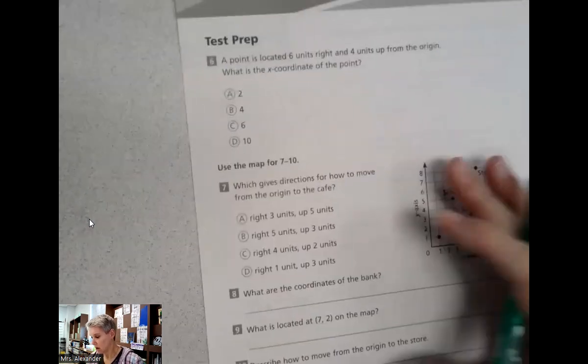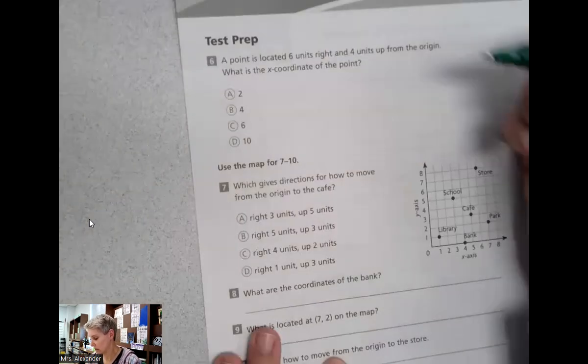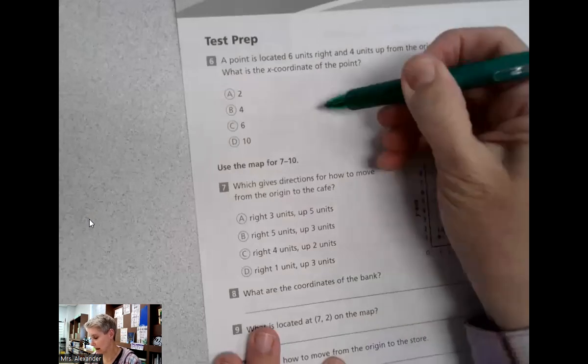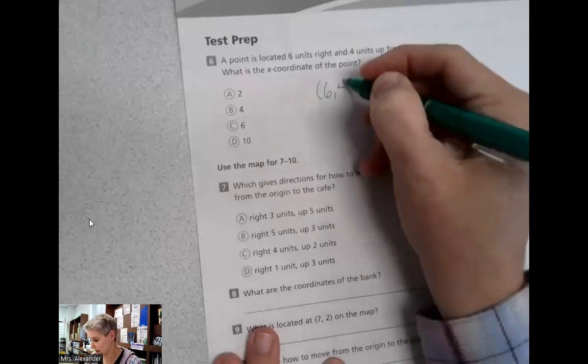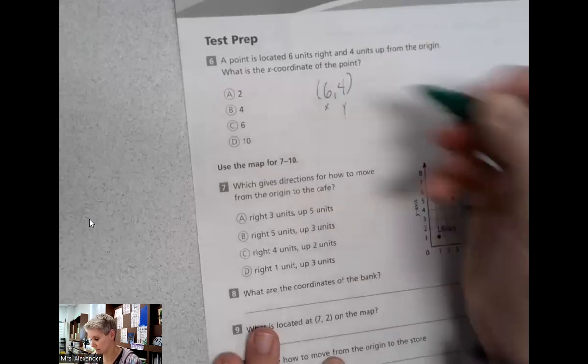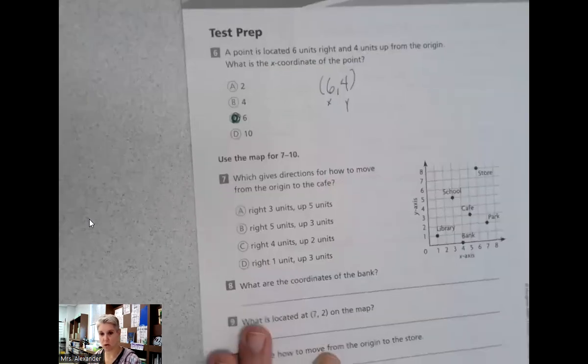So for the test prep, a point is located six units right and four units up from the origin. What is the X coordinate of the point? So we always talk about X axis and Y axis. So if it's at (6,4), this is X, this is Y, we're at six on the X coordinate.